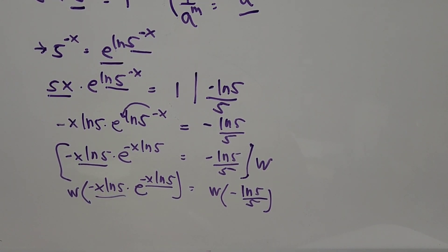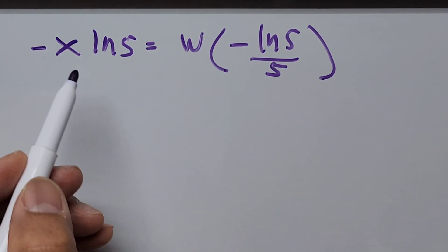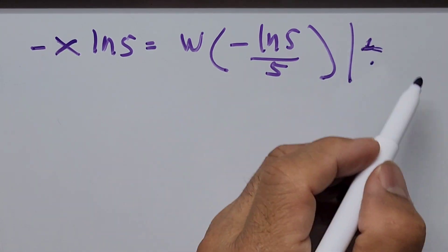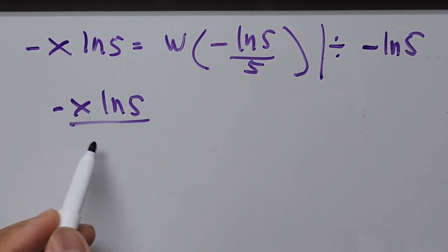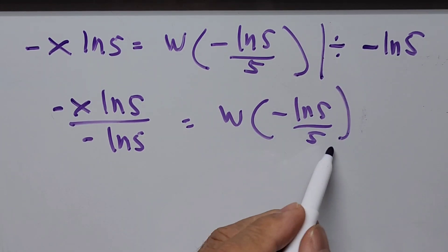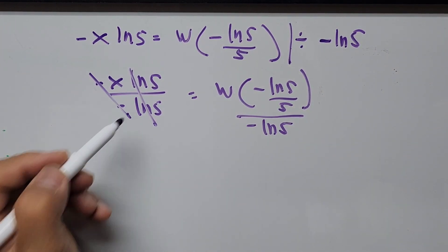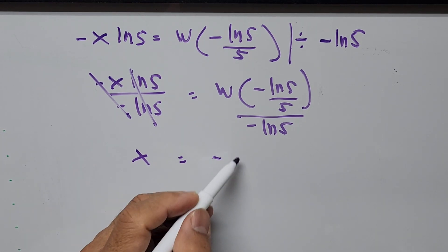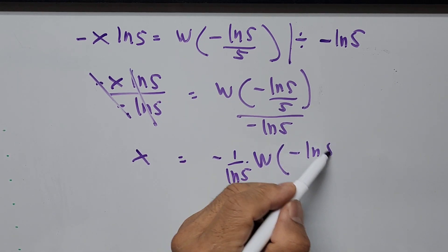Likewise for the exponent. So we have negative x ln of 5 equals W of negative ln of 5 divided by 5. To solve for x, we divide the whole equation by negative ln of 5. So x is equal to negative 1 over ln of 5 times W of negative ln of 5 divided by 5.